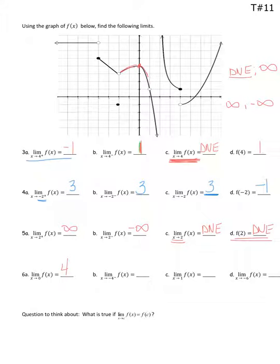The limit as x approaches negative 4 from the left — be careful, because a lot of times the font is very small and sometimes the arrow and the negative get confused, and people get their tests back and say 'I didn't even see that negative.' So look carefully at the number. I'm approaching negative 4 from the left — here's negative 4. From the left means less than. So I'm approaching negative 4 from the left and I'm headed towards this y value. Open circle doesn't matter. Counting up: that value is 7. So my limit would be 7.